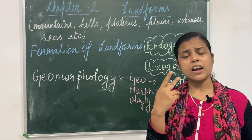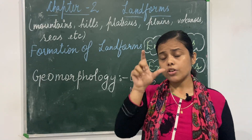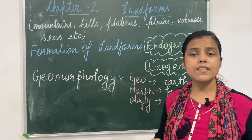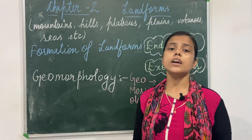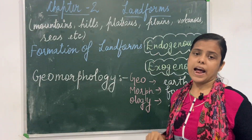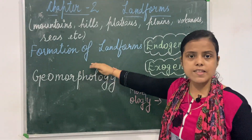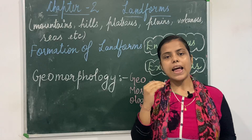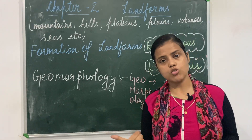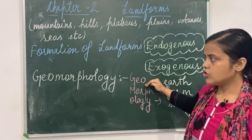Landform formation is categorized under two headings. The first one is exogenic, or you can say exogenous process, and the other one is endogenous, or endogenetic process. Landform is divided under two types: one is exogenous and another one is endogenous.